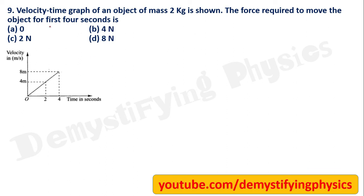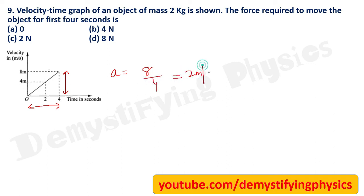A velocity-time graph is given. We find acceleration from the slope of the velocity-time graph: slope = perpendicular / base = 8 / 4 = 2 m/s². Force = ma = 2 kg × 2 m/s² = 4 Newton.